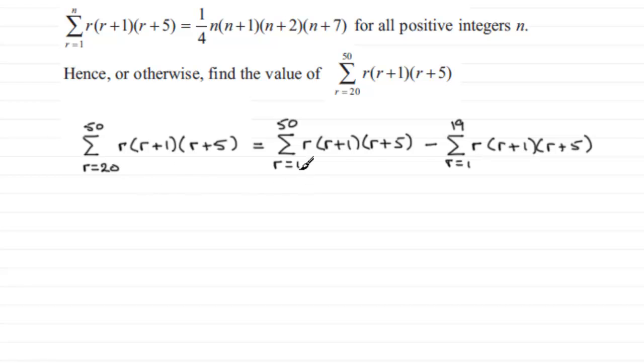We've got the results for these. In the first one here n is 50 and in the second one here n is 19. For the first one we're taking n to be 50 and all we've got to do is just substitute it in here. So it's going to be a quarter multiplied by n, which is 50, multiplied by n plus 1, so that's 51, then by n plus 2, so that's going to be 52, and then finally n plus 7, so that's going to be 57.